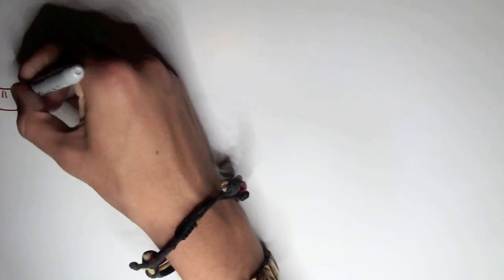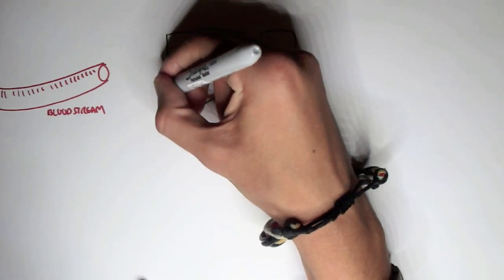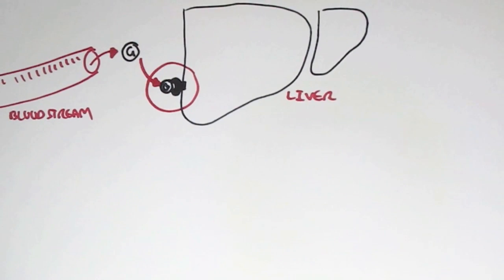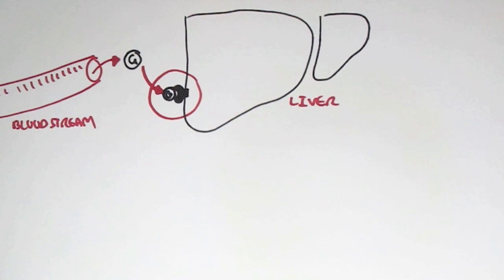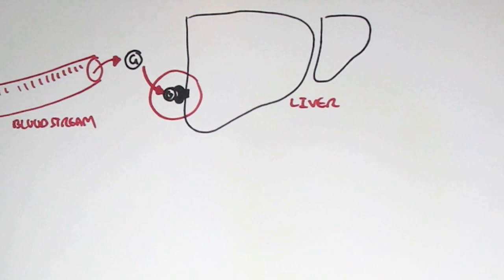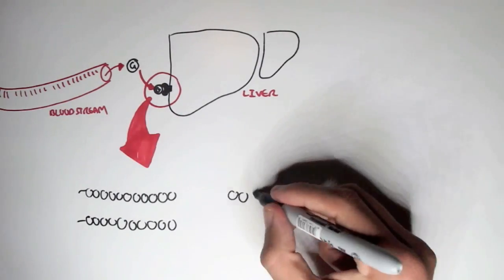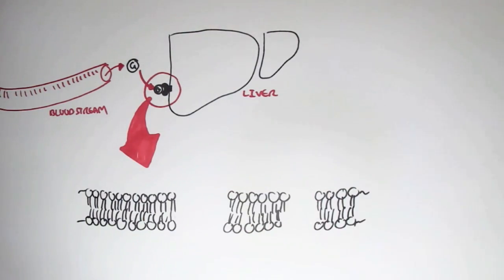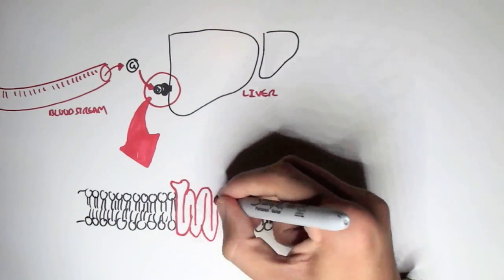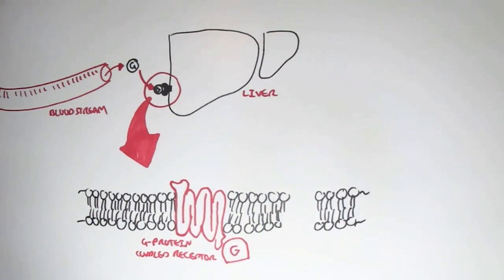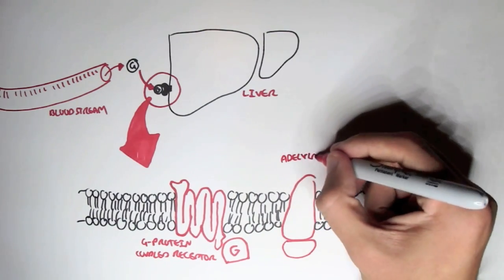Now that we know how glucagon is synthesized from the alpha cells, we can see how it affects the target tissue such as the liver. The liver has a receptor which glucagon can bind to and initiates its effects in the degradation of substances to be released into the bloodstream. Zooming into the liver, we can see it has a membrane with a G-protein coupled receptor, a G-protein in the intracellular fluid, and the effector protein adenylate cyclase, which is an enzyme.